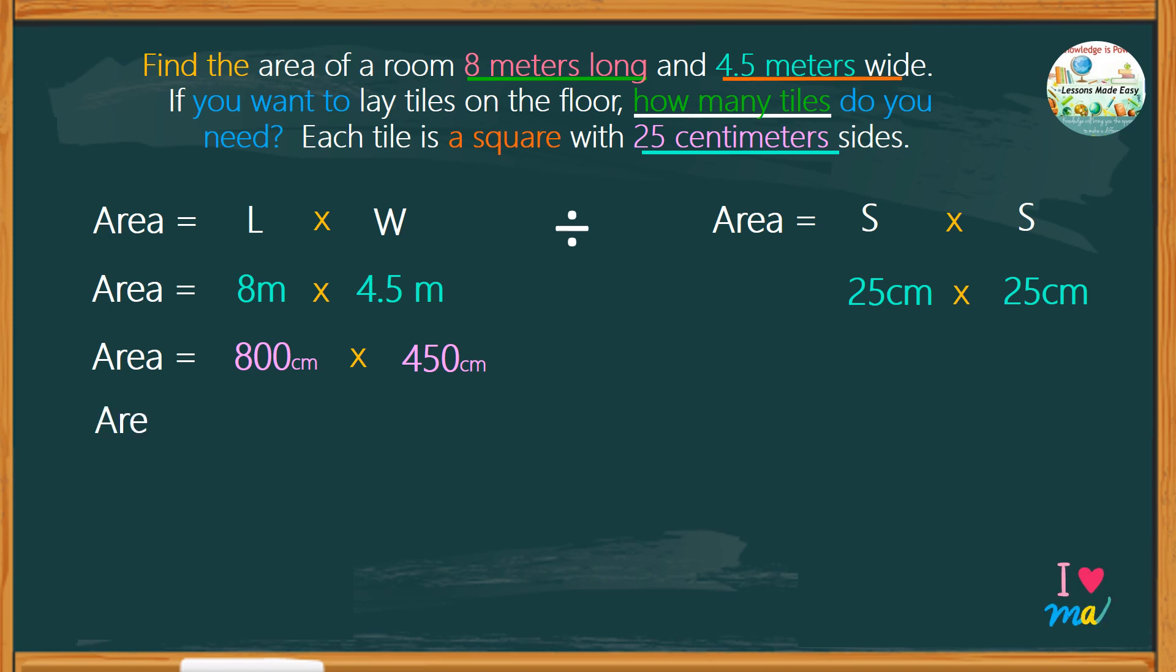Now, let's find the area of each tile. 25 centimeters by 25 centimeters would give us an area of 625 square centimeters.